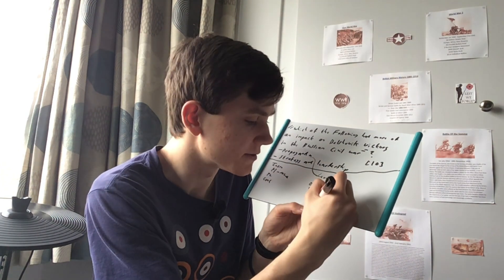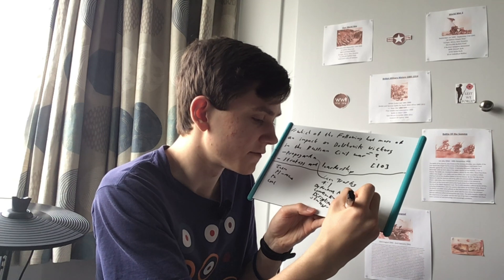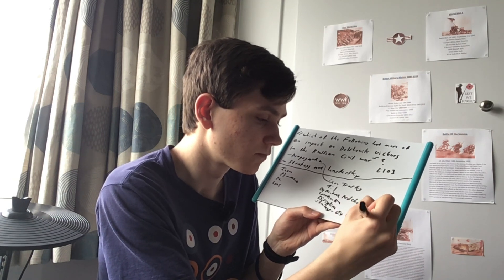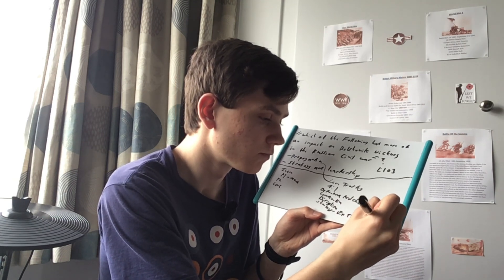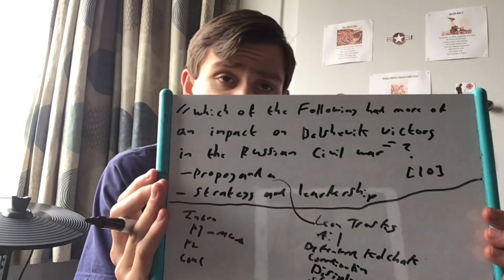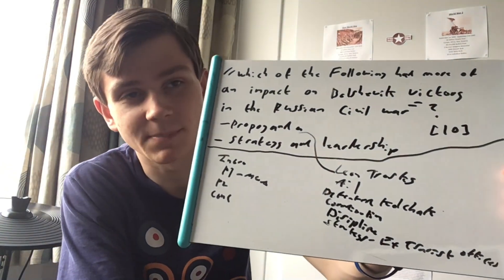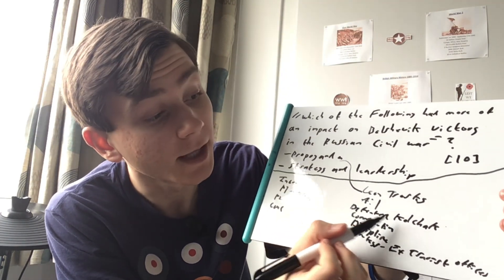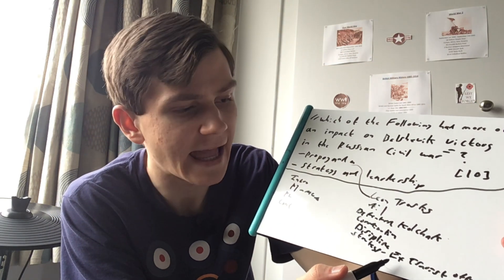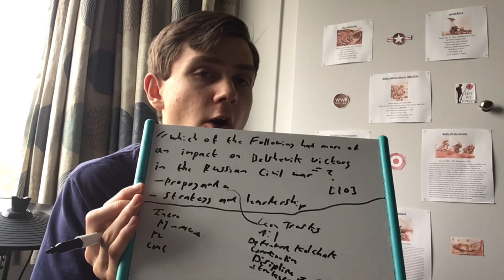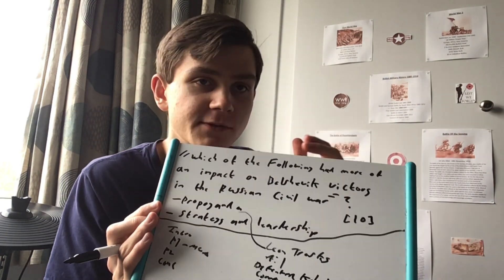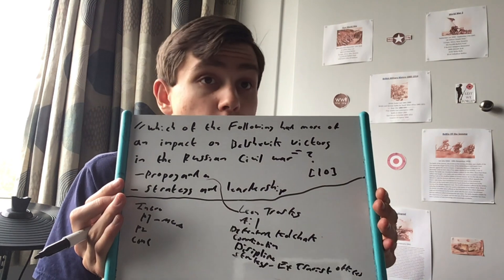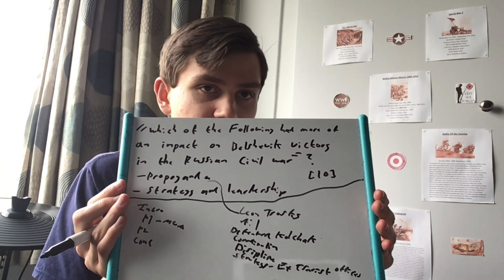They also employed ex-Tsarist officers — ex-Tsarist officers were placed under command of the Reds. So for those reasons: Leon Trotsky as a very strong leader, outnumbering the Whites four to one, the defeat of Kolchak, coordination, discipline, and the strategy of employing ex-Tsarist officers meant the Reds were far better coordinated than the Whites. The Whites were far less organized, lacked a common goal, were poorly disciplined, and were vastly spread out — compared to the Reds, who very much knew what they were doing throughout the Civil War.